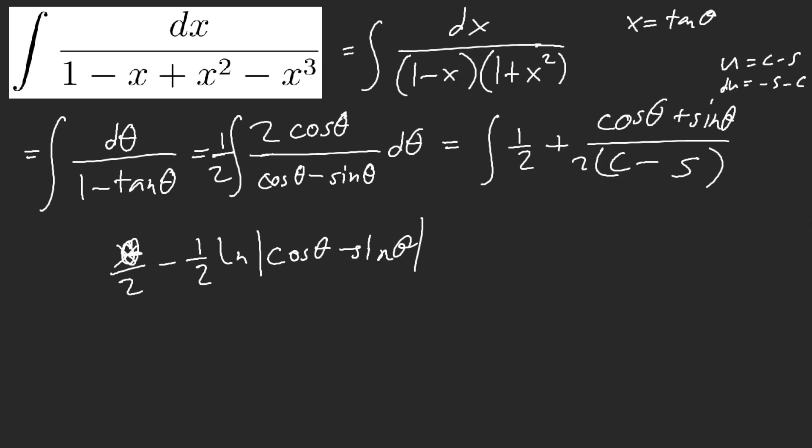So this is theta, again it's not half, and then you plug in theta, you get a half of inverse tangent of x, minus a half of Ln of cosine theta minus sine theta. You can actually turn this in terms of secant theta, multiply top and bottom by secant theta, so you get 1 minus tangent theta, and so this is actually 1 minus x over the square root of 1 plus x squared, plus C.